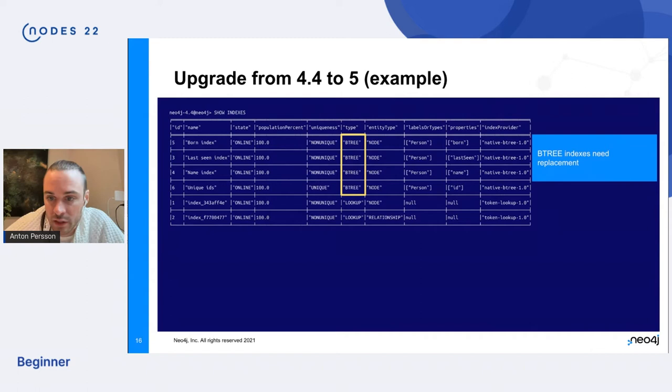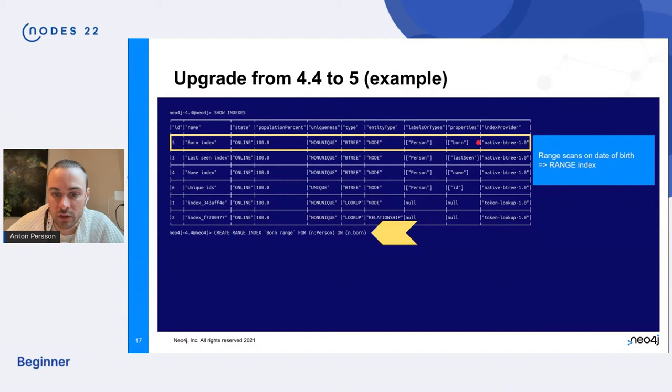So here we're sitting in Cypher shell and we have our show index command and we list all of the indexes that we have. And we see that there are a bunch of Btree indexes here that needs to be replaced. And we have the properties born, last seen, name, and an ID, all of them on the person label. So the index on born, we want that one to be a range index because we want to do range seeks on this property and the property is a number. So we create a range index to replace that one.